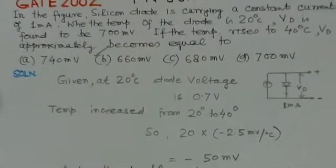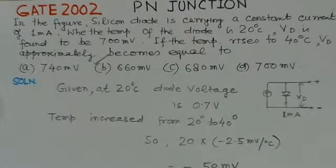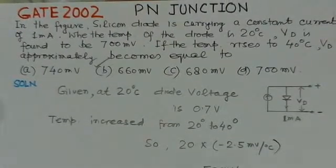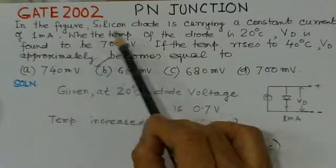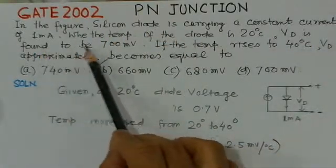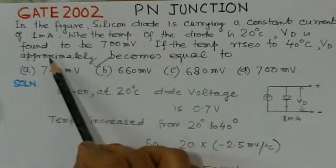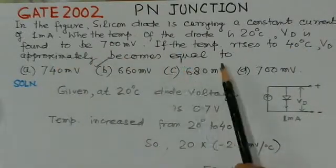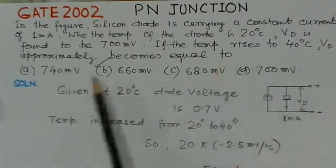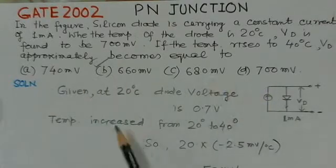Now looking at the GATE 2002 problem, which is very similar. In the figure, a silicon diode carries a constant current of 1 milliampere. When the temperature of the diode is 20°C, Vd is found to be 700 millivolts. If the temperature rises to 40°C, Vd approximately becomes — we need to find this from four options.